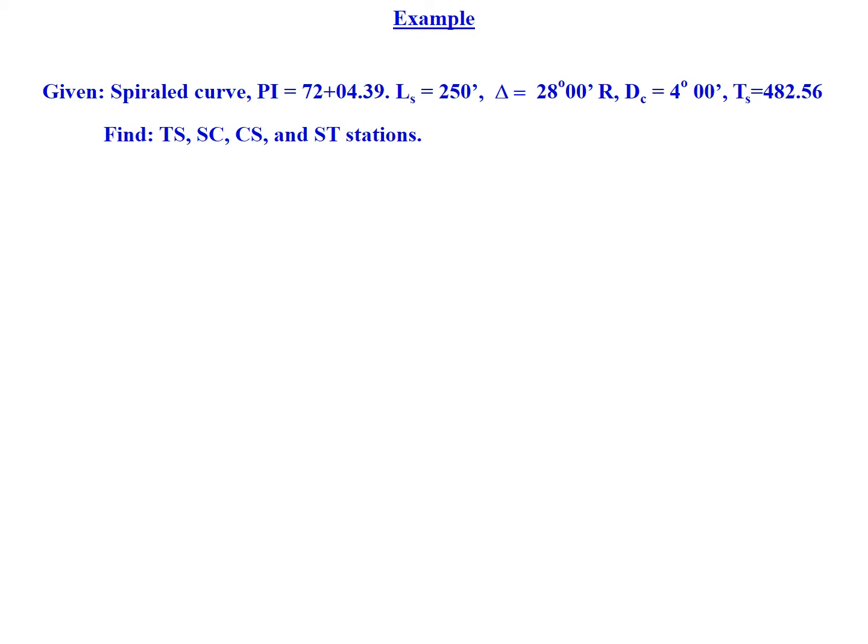In this example problem we'll look at a spiral curve. We're given a PI at station 72 plus 04.39, a length of spiral of 250 feet.